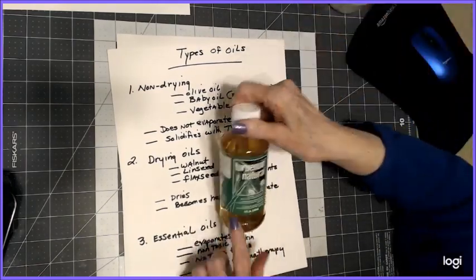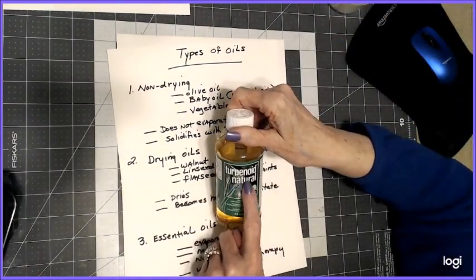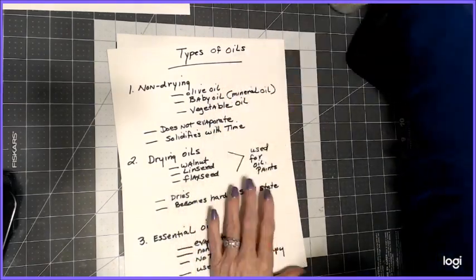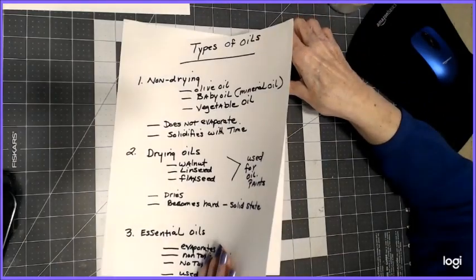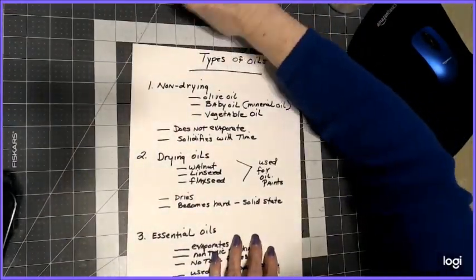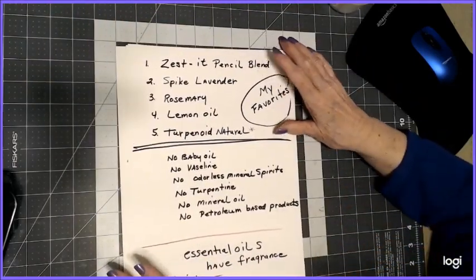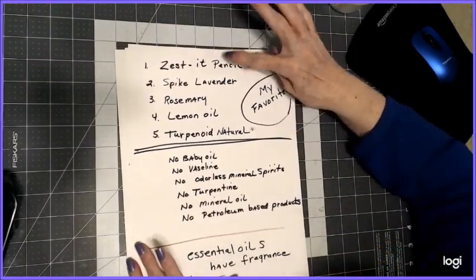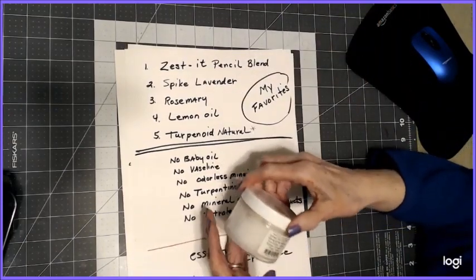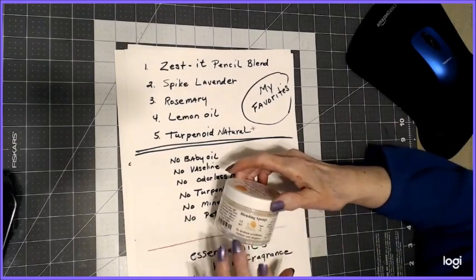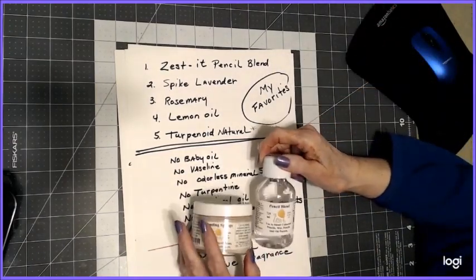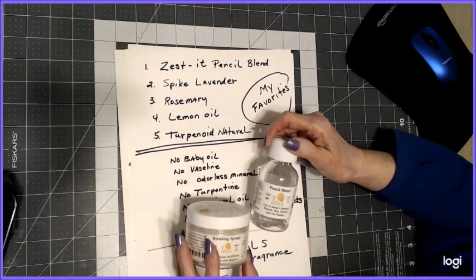I'm going to show you a little bit later more of my blending. Zest-It would be my number one choice, even though it's mixed with a solvent that is guaranteed by the manufacturer. There is a material safety data sheet from the UK that you can print off the internet.